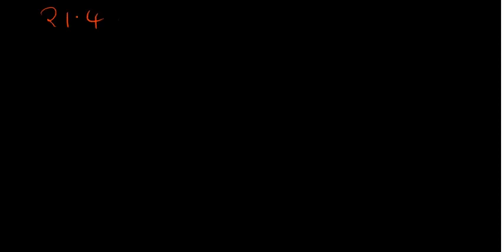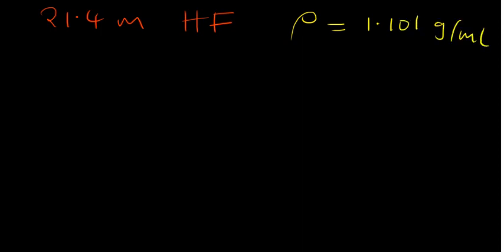For practice, try Example 2: 1.4 m (molal) of hydrogen fluoride with the density of the resulting solution given. The molar mass of hydrogen fluoride is 20.01 grams per mole — fluorine is about 19 and hydrogen is about 1, so they add up to 20.01.